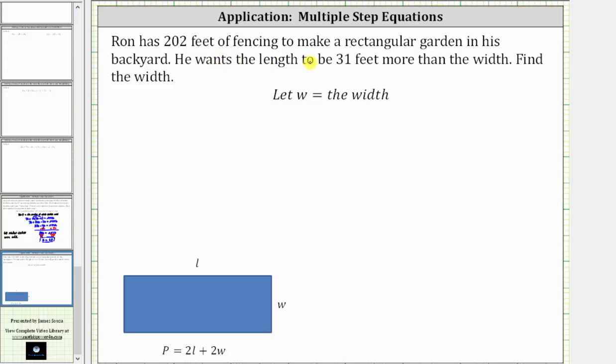Ron has 202 feet of fencing to make a rectangular garden in his backyard. He wants the length to be 31 feet more than the width. Find the width. We'll let the variable w equal the width.